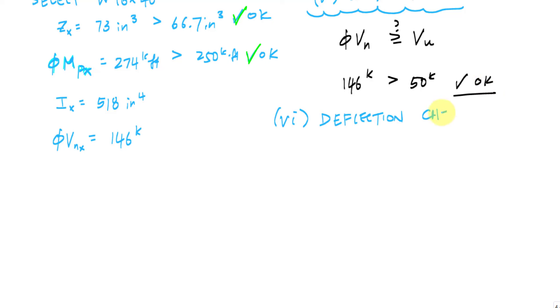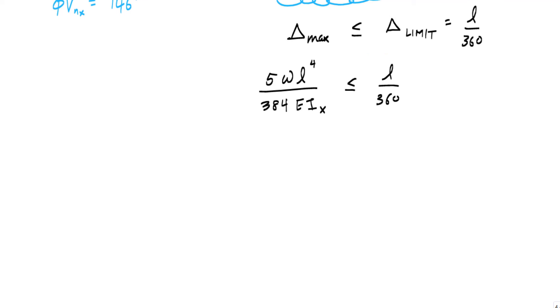Now I'm going to do a deflection check. Whatever the maximum deflection is in the beam, this has to be less than or equal to the limit. In this case, we're doing a live load check, so this is a L over 360 limit. The maximum deflection in a simply supported beam from table 3-22 of your manual is 5 W L to the 4th over 384 E I. This is going to be less than or equal to L over 360. Now this is a service criteria, so we're going to be using service loads. That means the loads are unfactored, and this is for live load only.